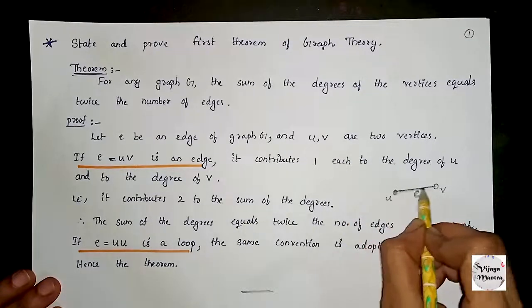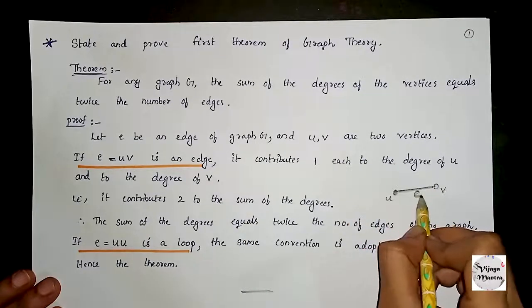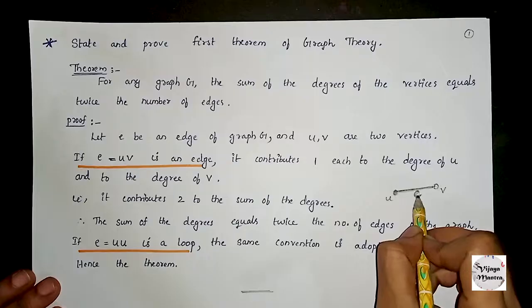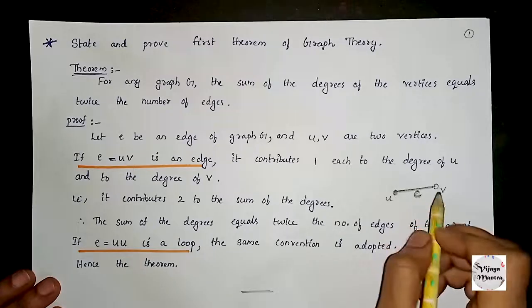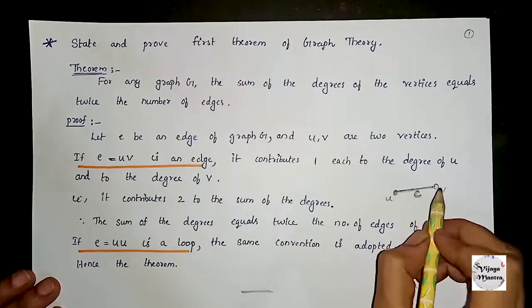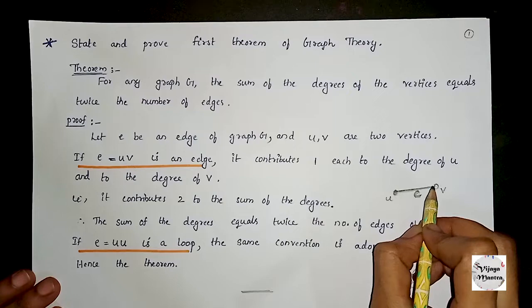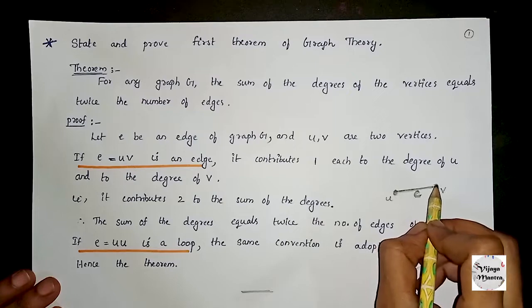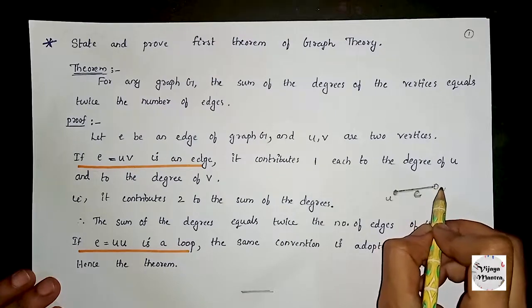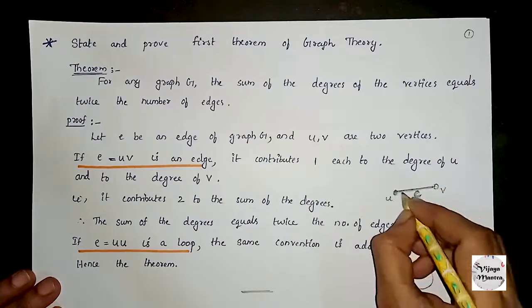If u, v is an edge — that is, e is an edge where u and v are distinct — it contributes one each to the degree of u and to the degree of v.